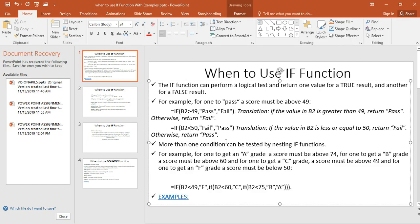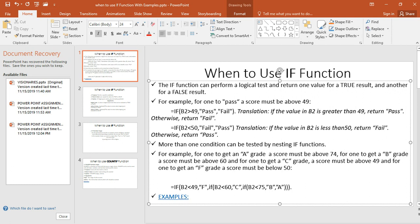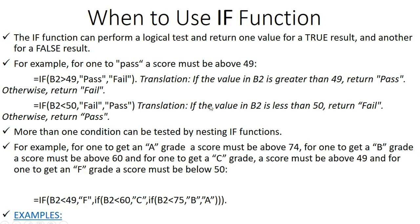If the value in B2 is less than 50, retain 'fail'; otherwise retain 'pass.' Meaning: if the mark is below 50 it's a fail, if it's above 50 it's a pass. More than one condition can be tested by nesting IF functions.